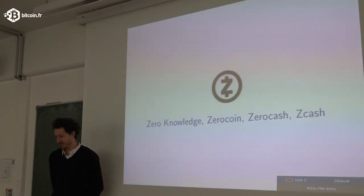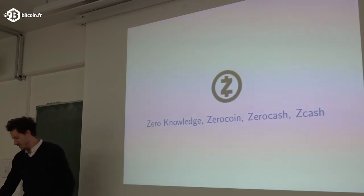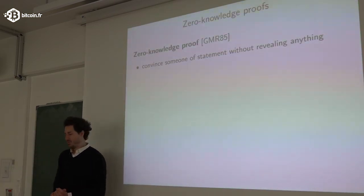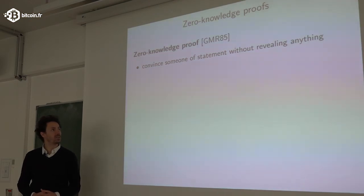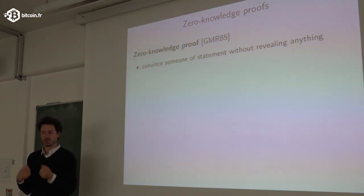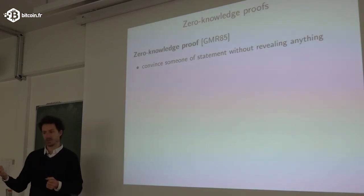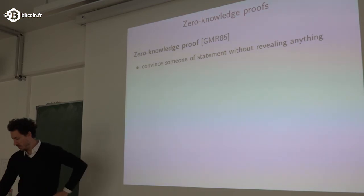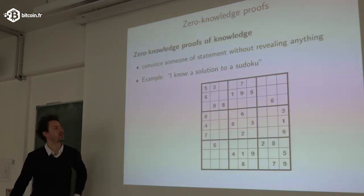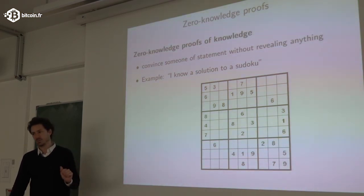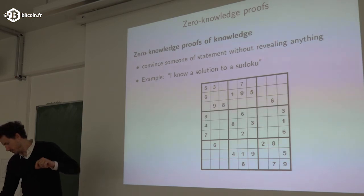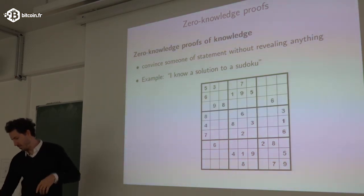I'll talk about zero-knowledge, Zerocoin, Zerocash, and Zcash. A zero-knowledge proof is a concept invented by Goldwasser, Micali, and Rackoff in 1985. It's about convincing someone that something is true without revealing anything else. The concept is best understood by example.